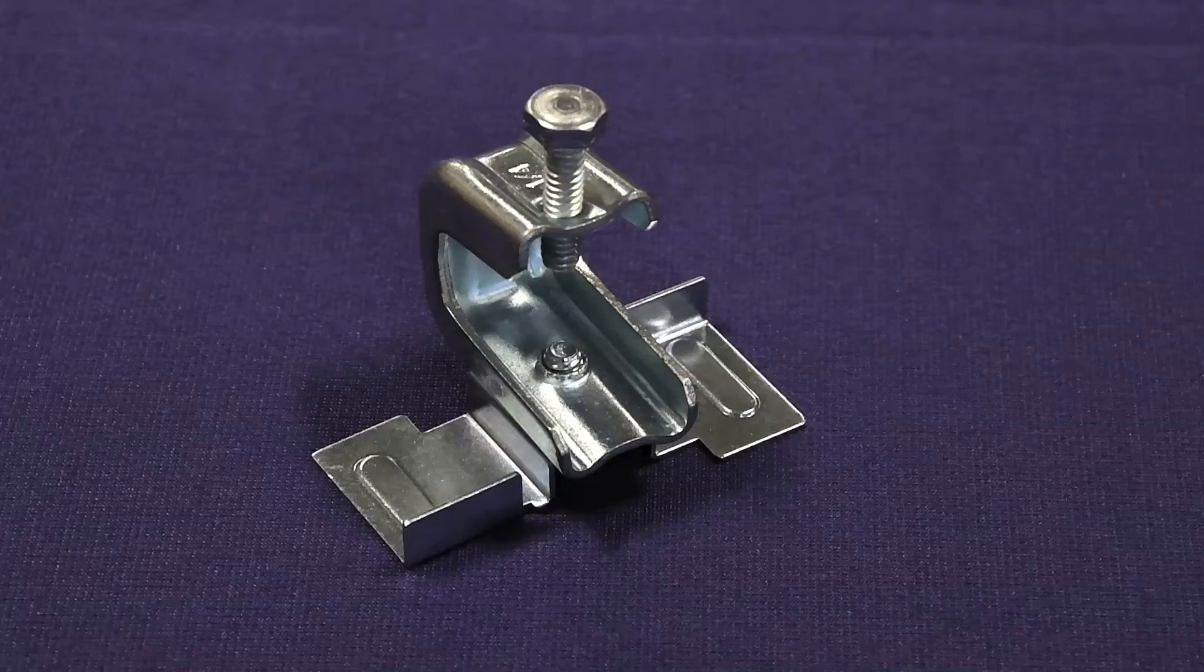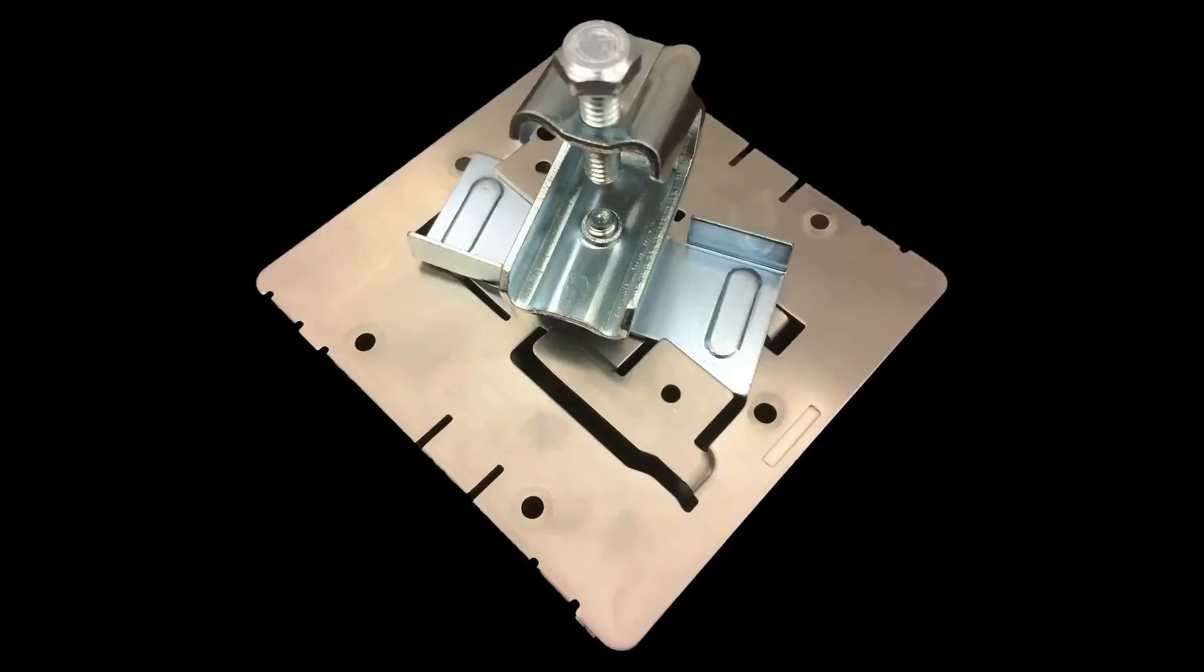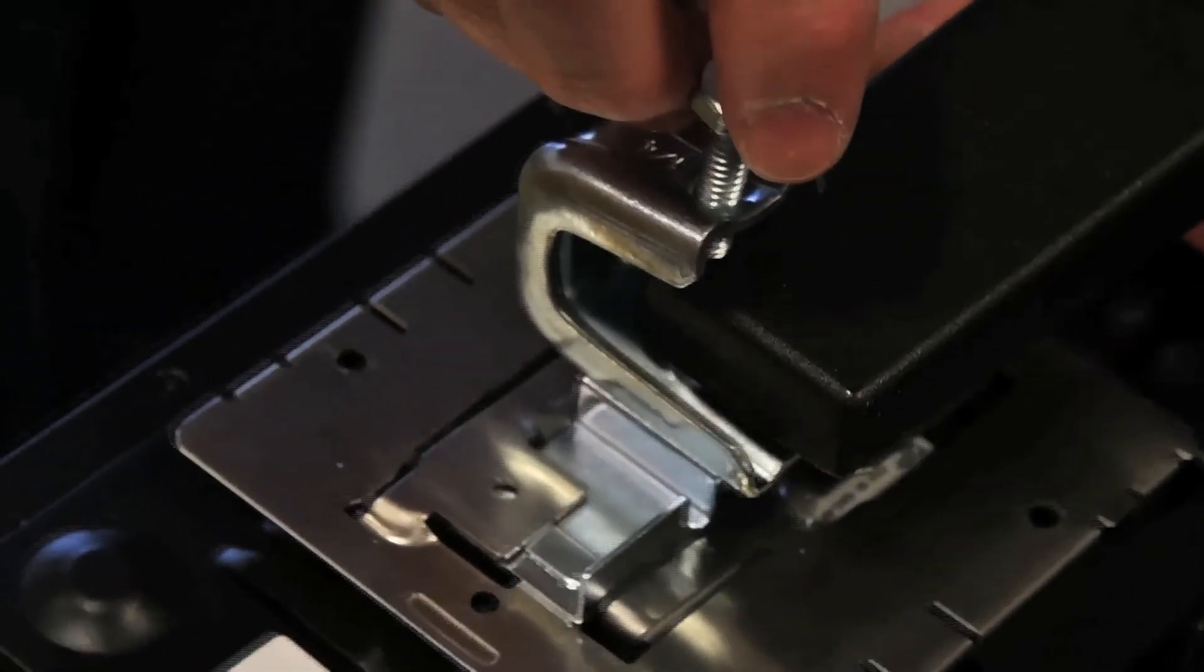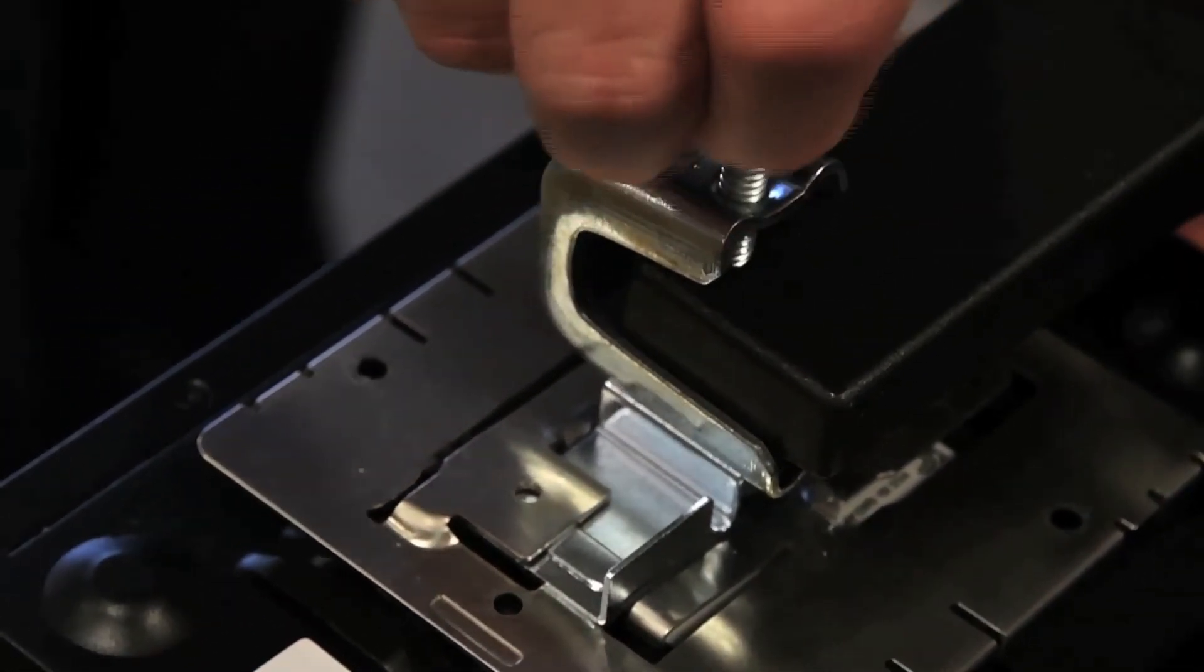The next adapter is for attaching to a beam. It attaches with a twisting motion to the main bracket. Line up the bracket so it is at about a 45-degree angle to the main bracket and in between the raised tabs of the main bracket and on top of the angled locking tabs. Push down and twist until the locking tabs pop back up, preventing the adapter from untwisting.